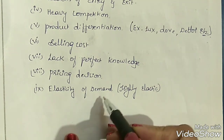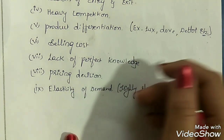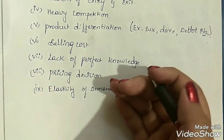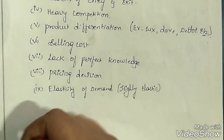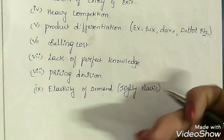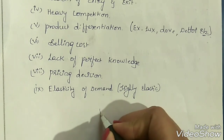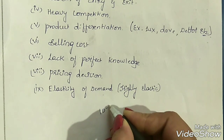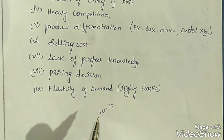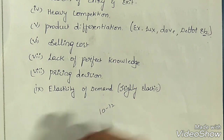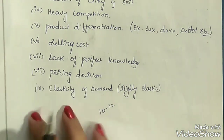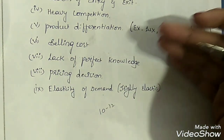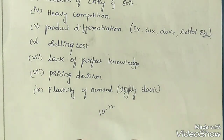Elasticity of demand: here the elasticity is highly elastic, meaning demand changes due to a change in price. For example, if the cost of a pen is around 10 rupees and the price increases from 10 to 12, the demand will fall. There will be a change in demand due to a change in price — that is what we call elasticity of demand. The demand quickly changes as the price changes.